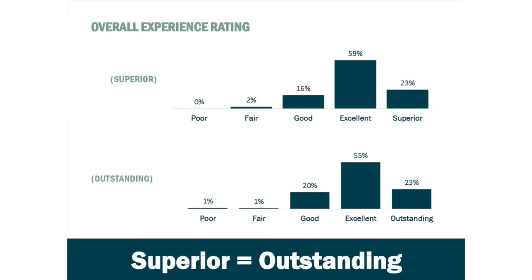However, when using the overall experience rating scale, responses now appear in more of a normal curve. We have succeeded in teasing out the differences between respondents in that top category. These two graphs show that you can use 'superior' or 'outstanding' as your top category — what is important is that you give respondents a choice above excellent.